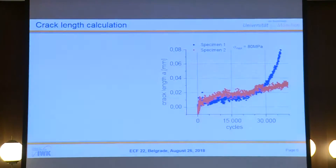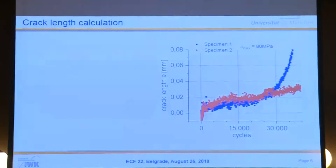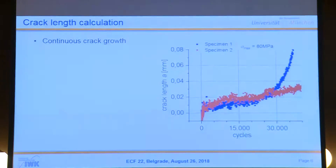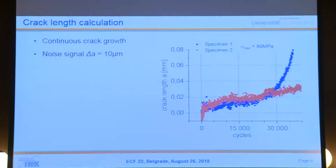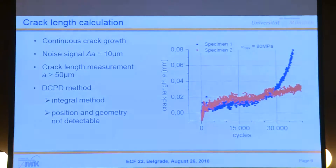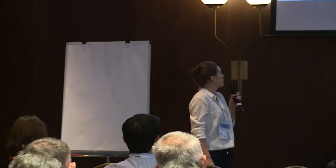Here you see the crack length calculation using the DC potential drop method — the Johnson formula diagram. We calculate the crack length using the Johnson formula and have continuous crack growth right after the first 100 cycles. These are two specimens with the same stress scenario but totally different lifetimes; specimen one shows a rising signal earlier than the other. We have a good signal-to-noise ratio with noise around 10 micrometers, so reliable calculation is possible above 50 micrometers. Keep in mind it is an integral method, so we cannot determine the position and geometry of the initial cracks.